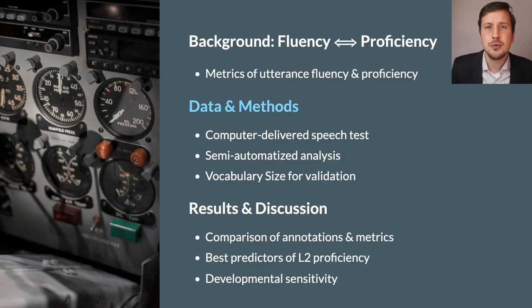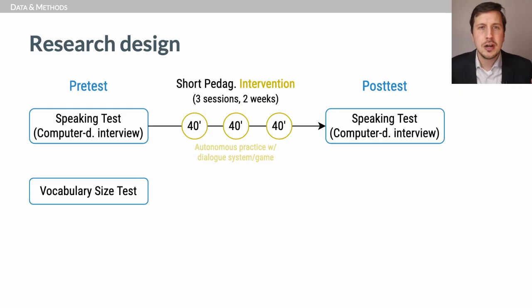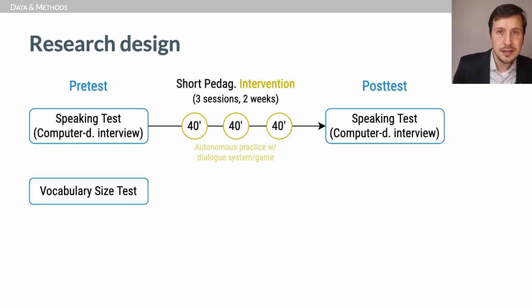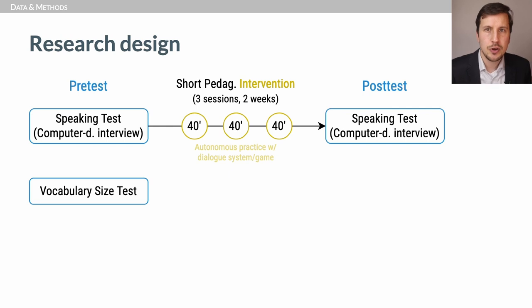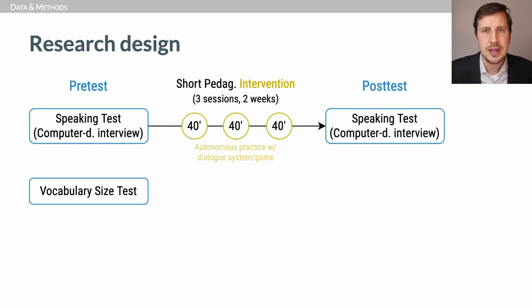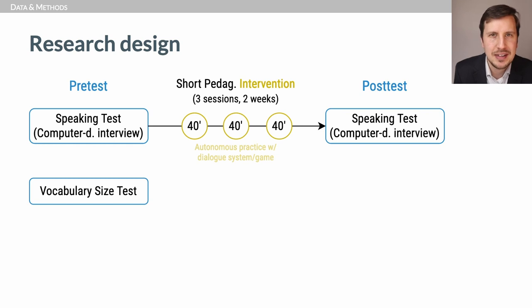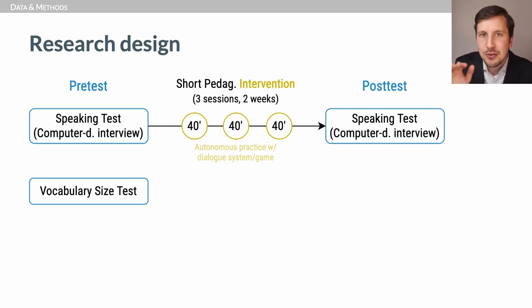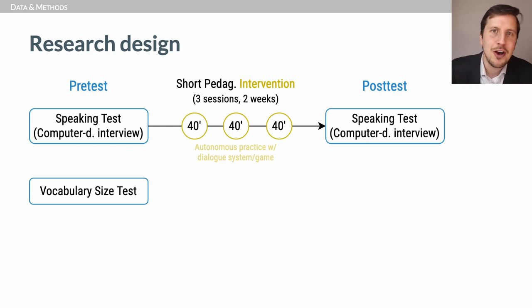How did we conduct our study? As mentioned, this was part of a larger experimental study, so I'm only mentioning the relevant parts. We designed a pre-test, post-test study with a very short pedagogical intervention in between, where young learners practiced the target language anonymously in written dialogues in three sessions of 40 minutes. Note that when Sengalowitz in 2017 talks about short-term learning gains, he's talking about five weeks of full-time immersion — here, we were optimistic enough to hope for visible fluency gains in only two hours of intervention.